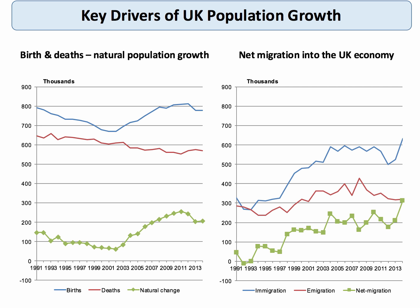Net migration into the economy is the difference between immigration and emigration, and this has become a big political as well as economic issue in recent times. In 2013, net inward migration climbed above 300,000 for the first time, and most forecasters believe that under current policies net inward migration will continue to be a significant factor driving the population size up. Migration economics will be covered in a separate topic video.